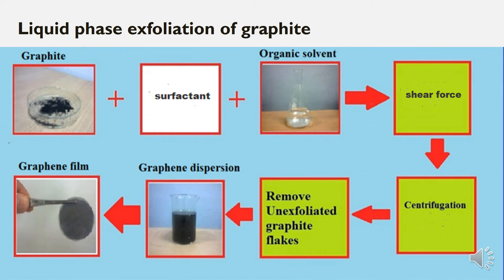Here is a representative diagram of liquid phase exfoliation of graphite. Graphite powder is mixed with a solvent that has suitable physical qualities such as viscosity, surface tension, etc., and is then subjected to mixing by an external energy for separating the sheets of graphene.